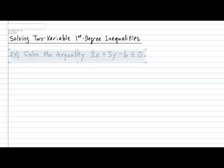Solving two variable first-degree inequalities presents a huge complication versus only one variable inequalities. To take a look at what this complication is, let's look at an example. Suppose I ask you to solve the inequality 2x plus 3y minus 6 smaller than or equal to 0. The complication is that there can be potentially billions of combinations of x and y that will cause this statement to be true. So the big question is: how do we provide a conclusion that will give us all possible combinations of x and y?